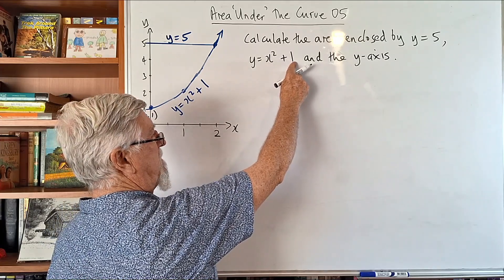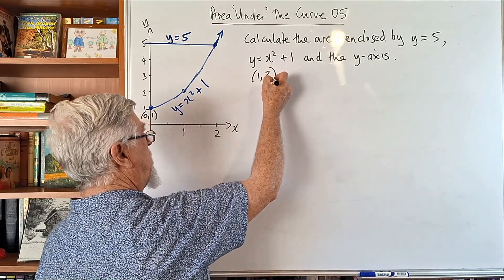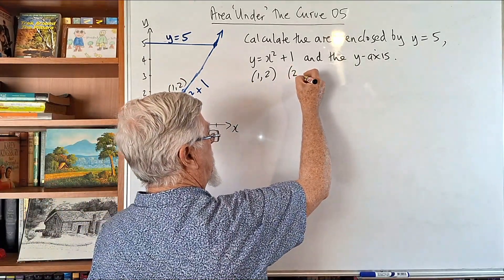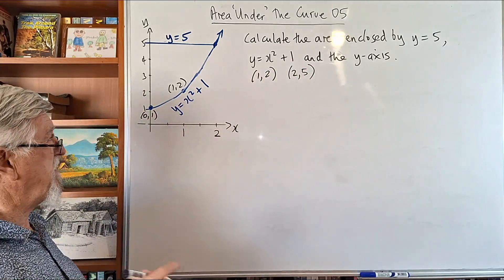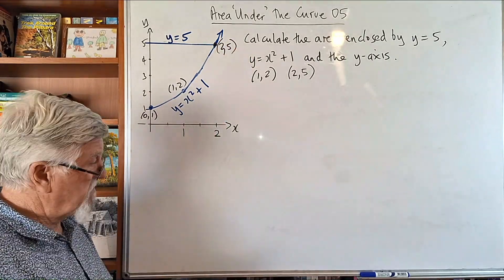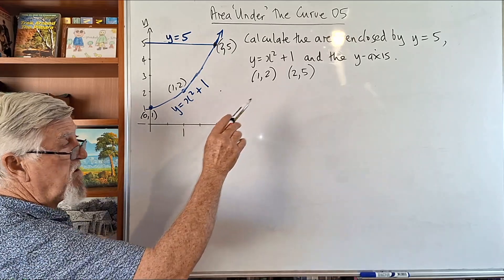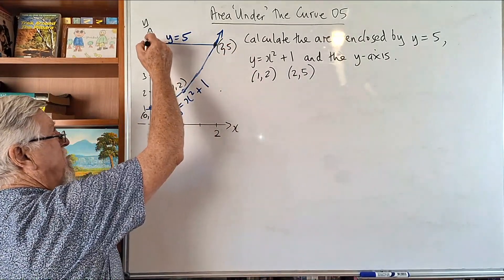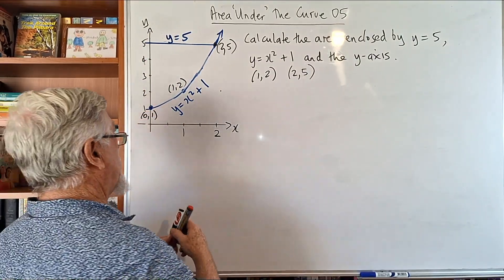Putting in x equals 1 gives 1 squared plus 1 equals 2, so that's the point (1, 2). Putting in x equals 2 gives 2 squared plus 1 equals 5, so that point is (2, 5). Now, what is enclosed? Is the area in between that line, the parabola, and the y-axis? That just answers yes. Some people do struggle with this, so we're talking about this red area here.